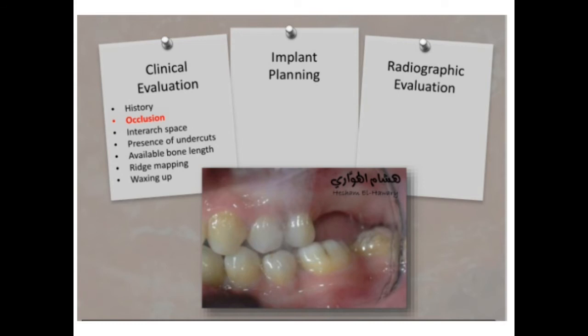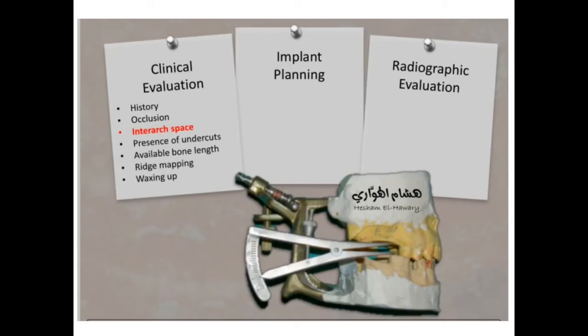Clinical evaluation is what you do when the patient comes to your clinic and you examine inside the mouth. Many things are important — never miss occlusion, as it is the most important thing. Then the most critical thing, in my view, is the inter-arch space. Remember: the patient is coming for the tooth, not for the implant. So you need enough space to place the crown.